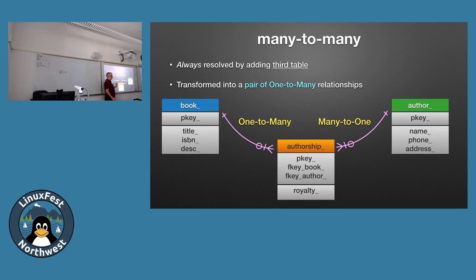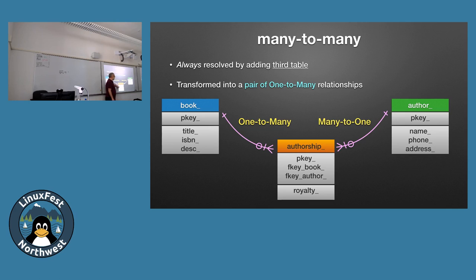How do we solve many-to-many? The answer is a third table. Whenever you have two entities that each can relate to many of the other, you automatically add another table — sometimes called a bridge table or junction table. That table gets two columns: the foreign key ID from each of the two related tables. Some databases let you combine those two fields as a composite primary key on that table, and relationally that's actually correct. Postgres supports that. In practice I put an arbitrary surrogate primary key on everything, but relationally the combined key is the right approach.